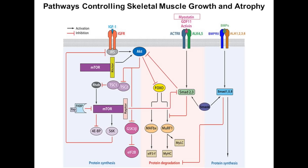If you take away myostatin signaling, then for the same amount of IGF-1 you would potentially get more signaling. One could imagine therapeutically either increasing IGF-1, which we've tried in mice but is not practical in humans, or inhibiting myostatin. A number of ways to do this have been devised, and some are now in the clinic. There's also another pathway labeled BMPs, which can also inhibit myostatin — so you have these three parallel pathways: myostatin, GDF-11, and BMPs, which are things that put the brakes on or relieve the brake on muscle growth.